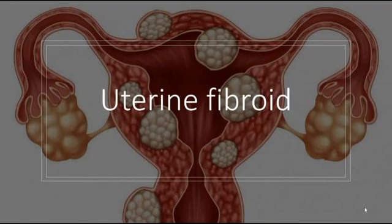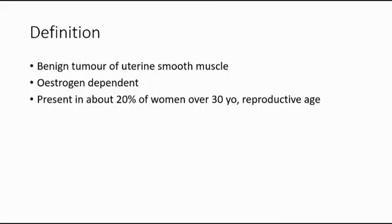Today I'm going to talk about uterine fibroid. Uterine fibroid is a benign tumor of the uterine smooth muscle. It is oestrogen dependent and present in about 20% of women, especially in reproductive age.